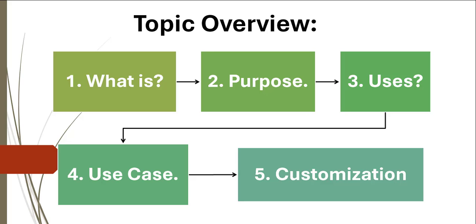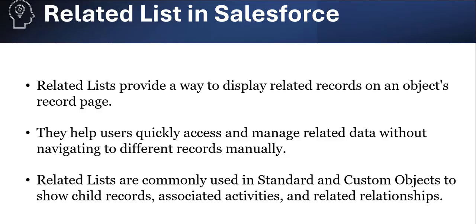First, let's understand what is the related list in Salesforce. The related list provides a way to display related records on an object's record page. If any object is in a lookup, master-detail, or many-to-many relationship, the related records can be displayed on the parent record. The related list helps users quickly access and manage related data without navigating to different records manually.